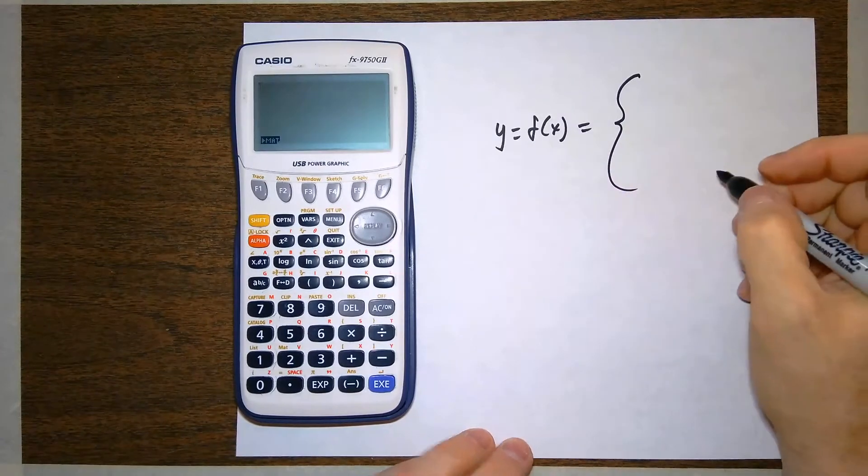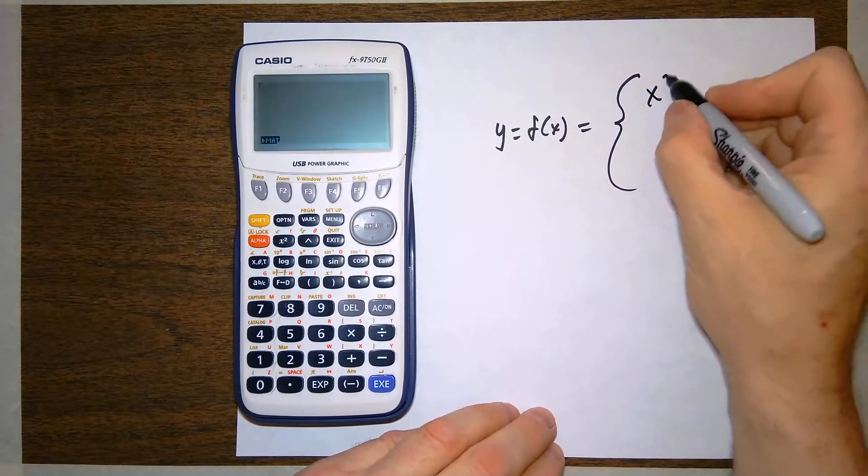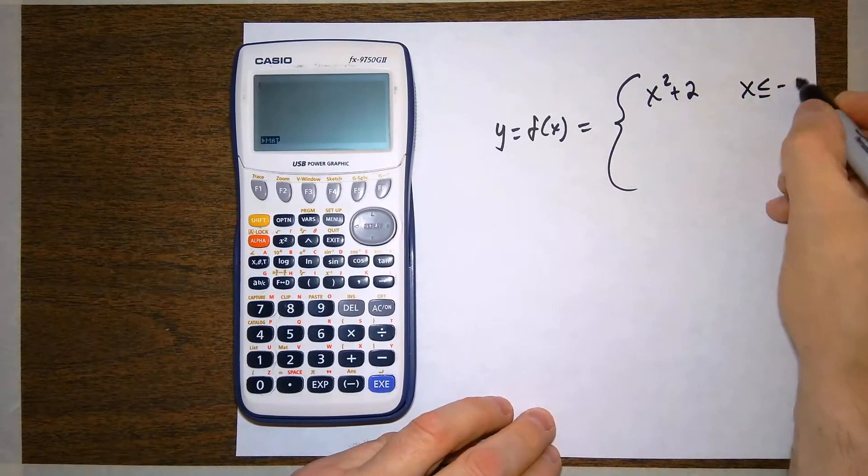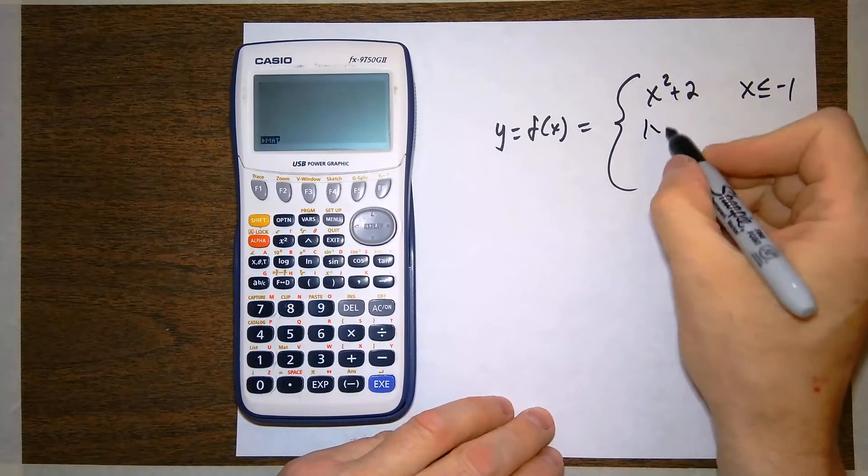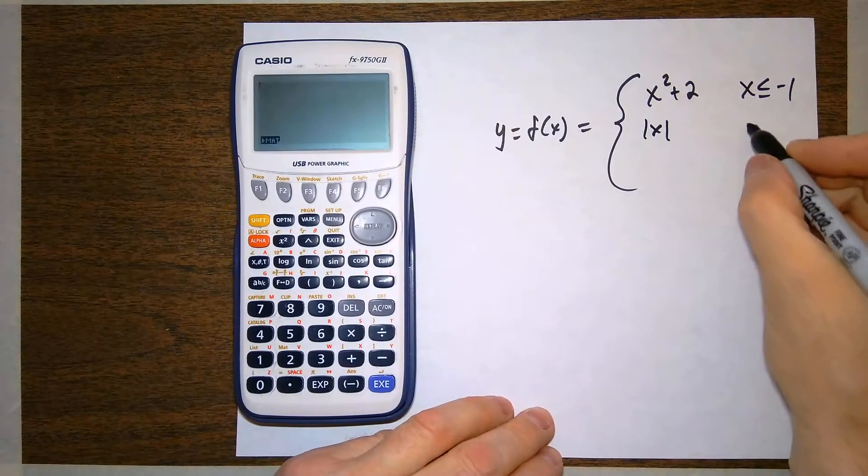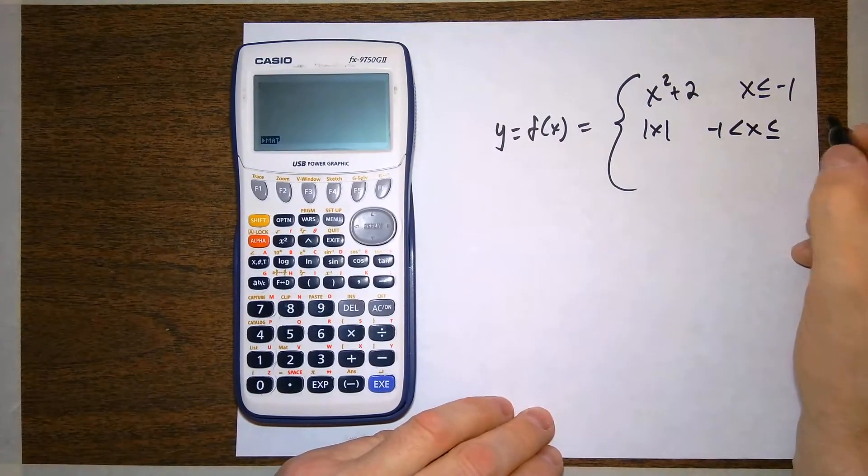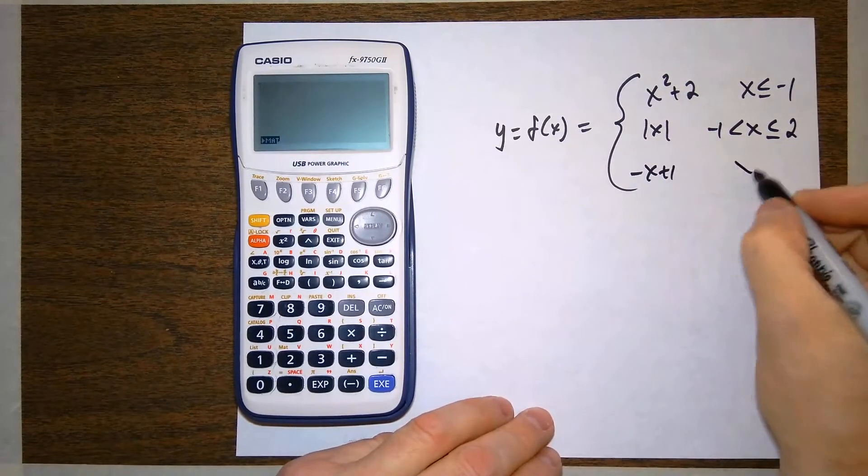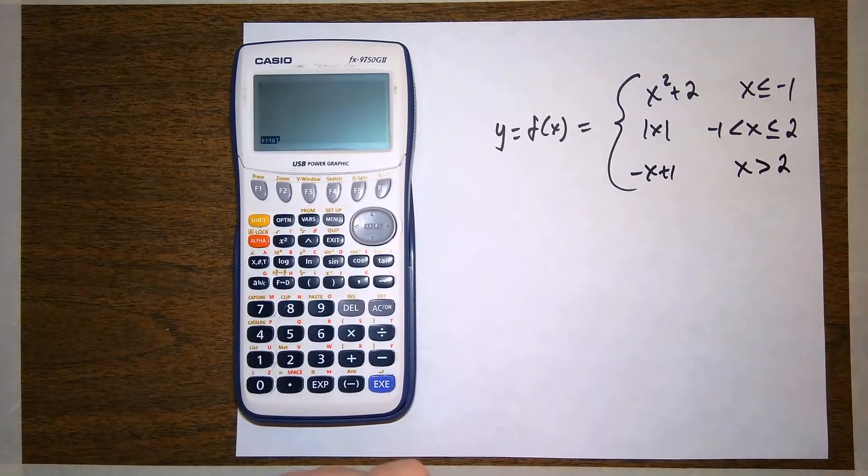piecewise defined as x squared plus 2 when x is less than or equal to negative 1, the absolute value of x when x is greater than negative 1 but less than or equal to 2, and the line negative x plus 1 when x is greater than 2.